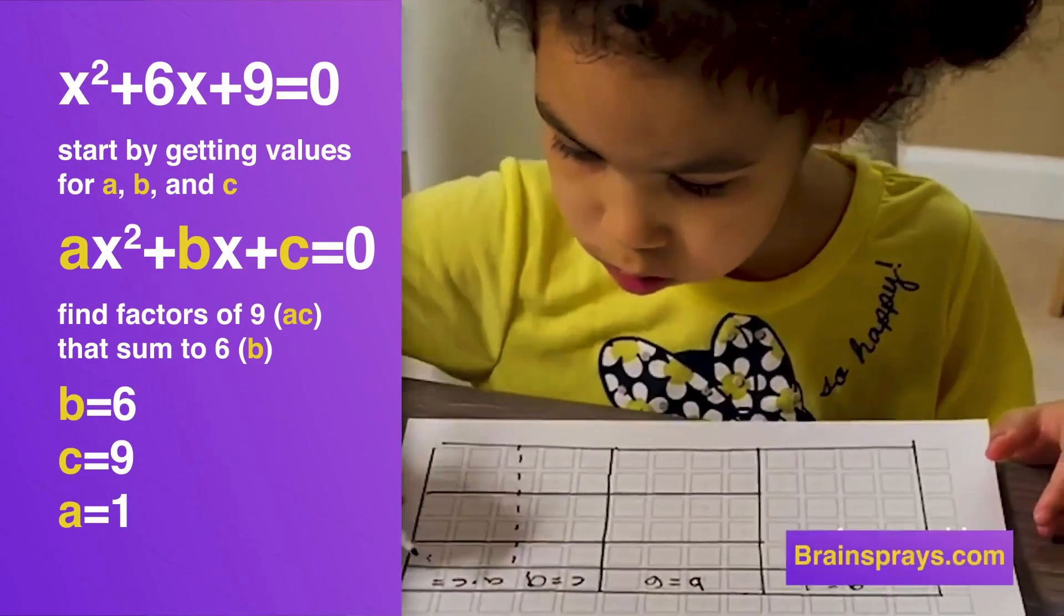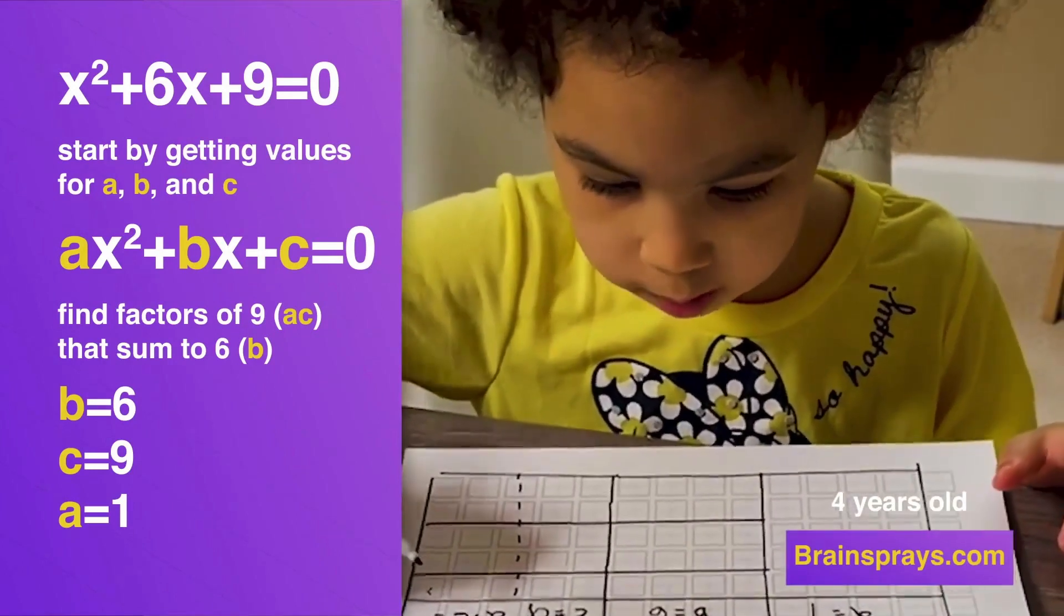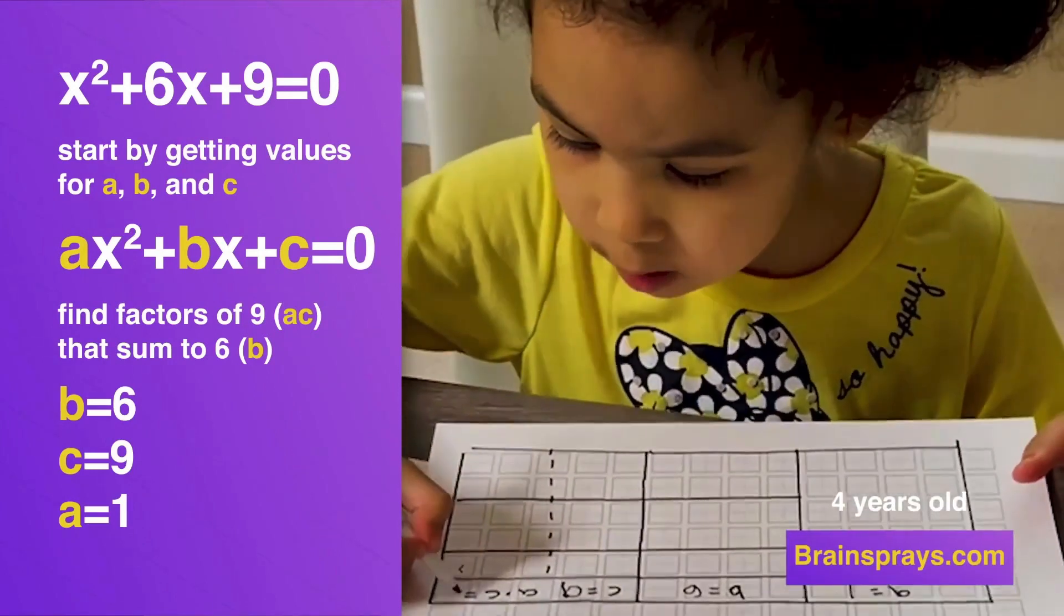So then just say what 1 times 9 equals. 1 times 9 is 9. Then write that next to it. Yeah? Yep.